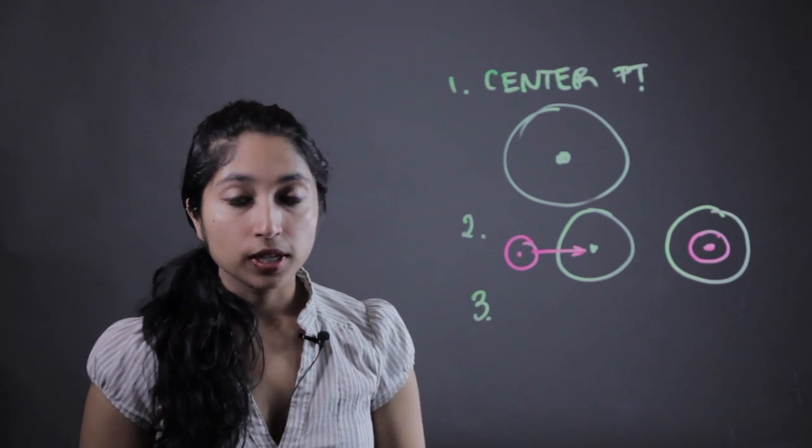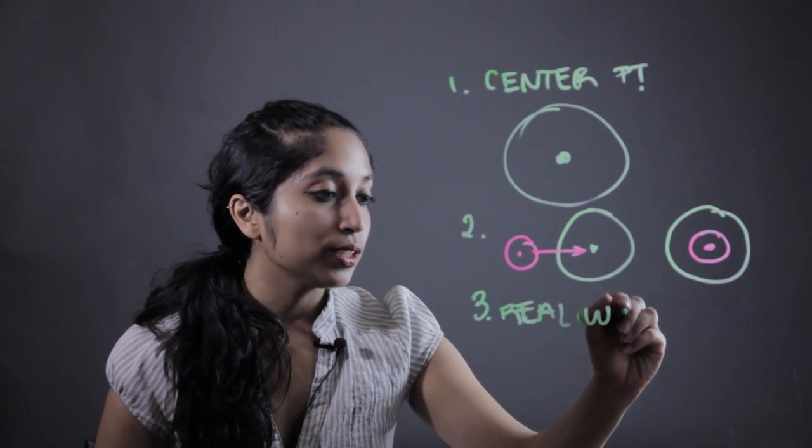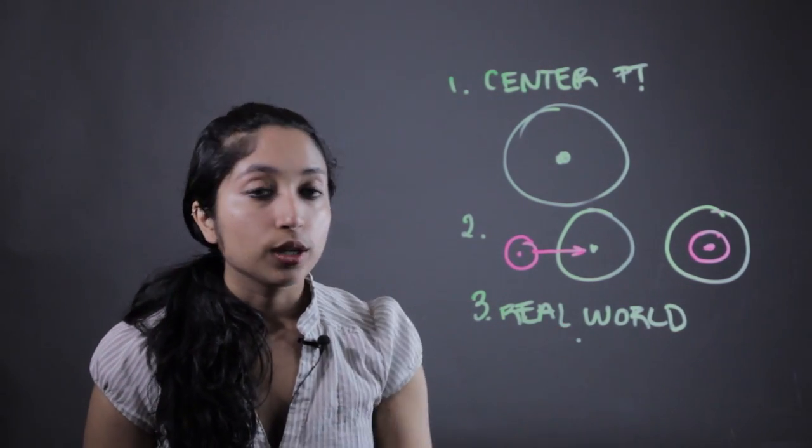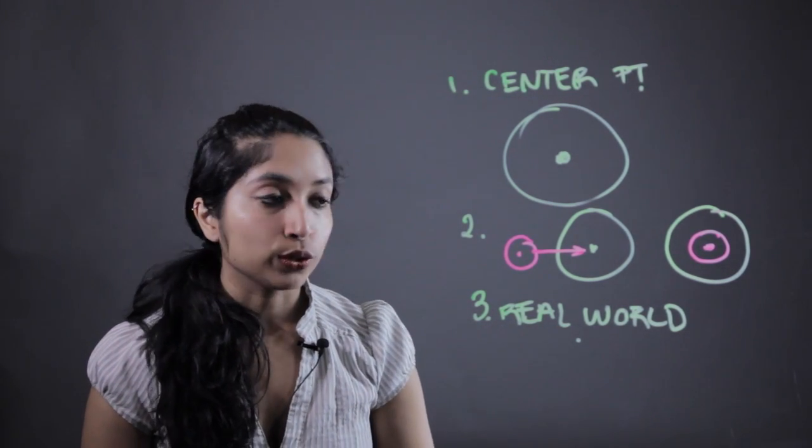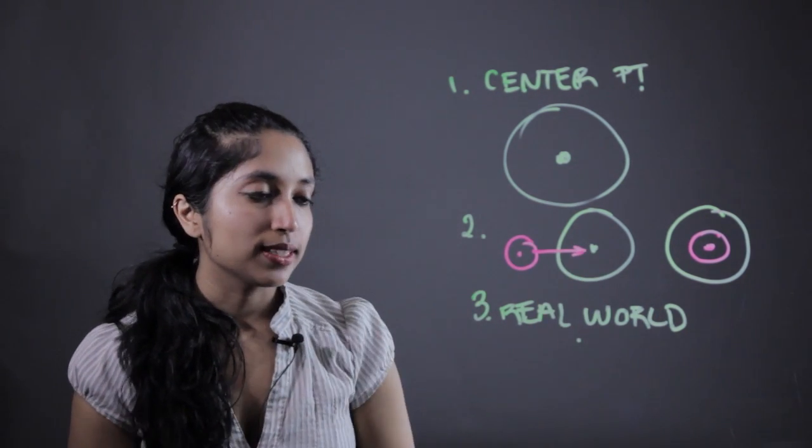The third thing you're gonna want to do is give them lots of real world examples so they can understand where they've seen this and better memorize it. So a good example is like a dart board or the layers of the earth and different things like that just to help them cement it.